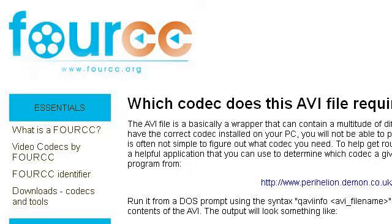Our top-ranked site to learn about how to download the codec needed to play AVI files is www.4cc.org, specifically the page titled 'How do I find which codec is needed to play an AVI file.' This is the link.